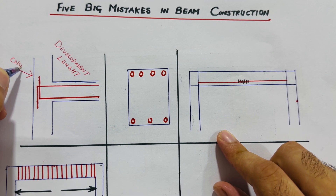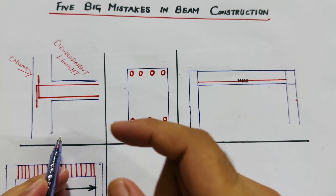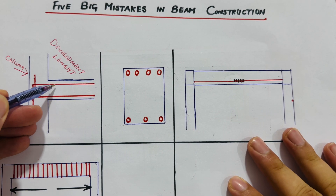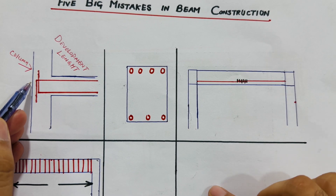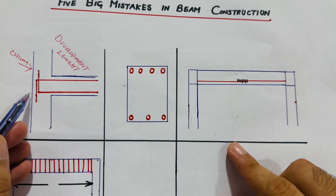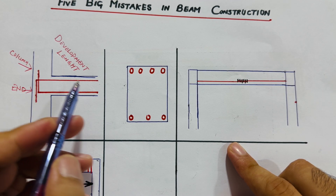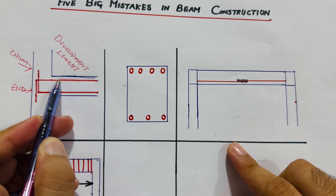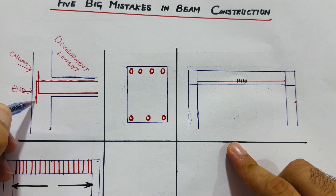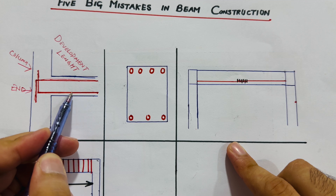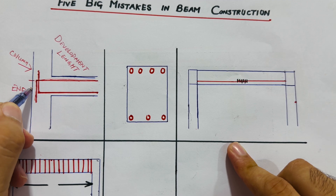This is an RCC column — the support. At the end of the beam, this is the joint between the beam and the column. This is the end of the beam at the support. The red lines show steel reinforcement. At the bottom, steel is in the tension zone, and at the top it goes upward. This bending of the steel at the end is called development length.